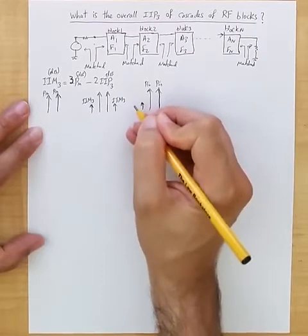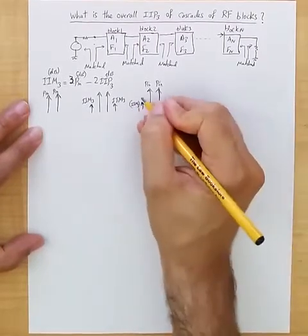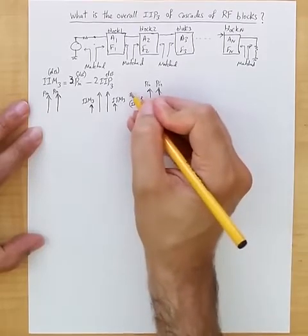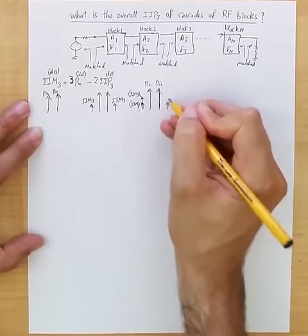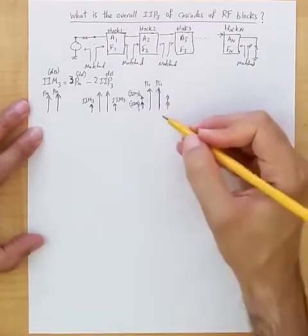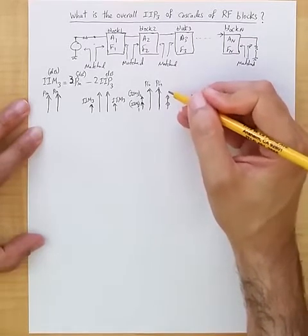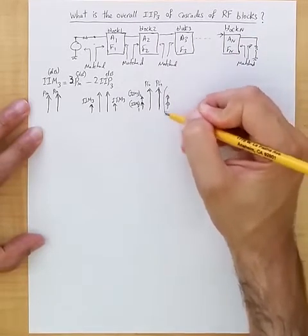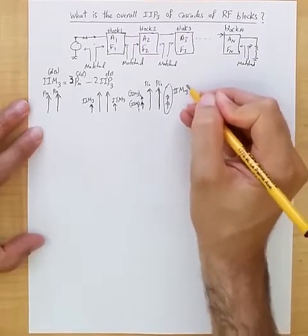But then we have the IIM3 of block one, in addition to it we have IIM3 of block two input referred to the very input, and the same thing with the other side. Now as we go through all the blocks, these components add up together and result in an overall IIM3 input referred that we want to compute.